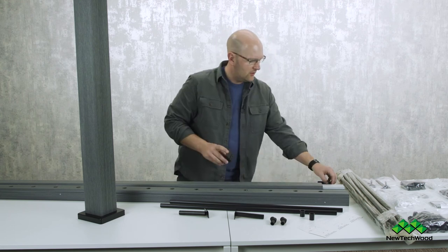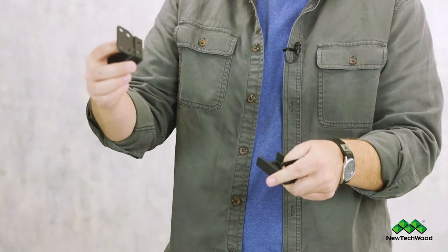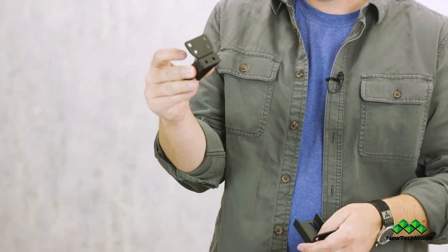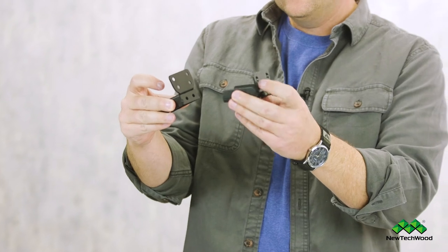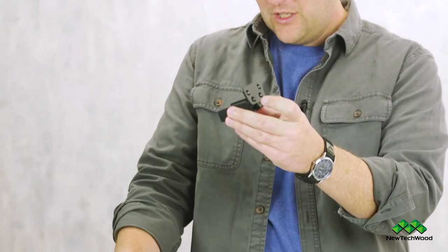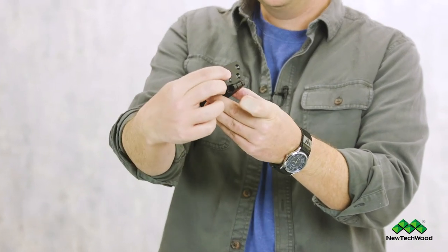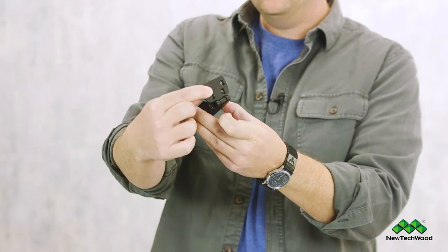One is the mounts themselves. So you can see this is your fixed mount right here that you use for your straight railing system. This one is almost identical but you'll see here there's a hinge and it allows it to get to that perfect angle for your stairs.